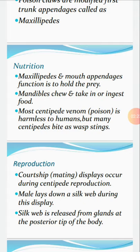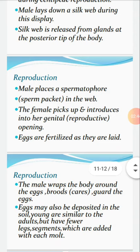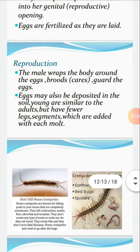Reproduction: A courtship mating display occurs during centipede reproduction. The male lays down a silk web during this display. The silk web is released from glands at the posterior tip of the body. The male places a spermatophore, that is a sperm packet, in the web. The female then picks up and introduces the sperm packet into her genital or reproductive opening. Eggs are fertilized as they are laid. The male then wraps around the eggs and broods, that is guards and takes care of, the eggs.